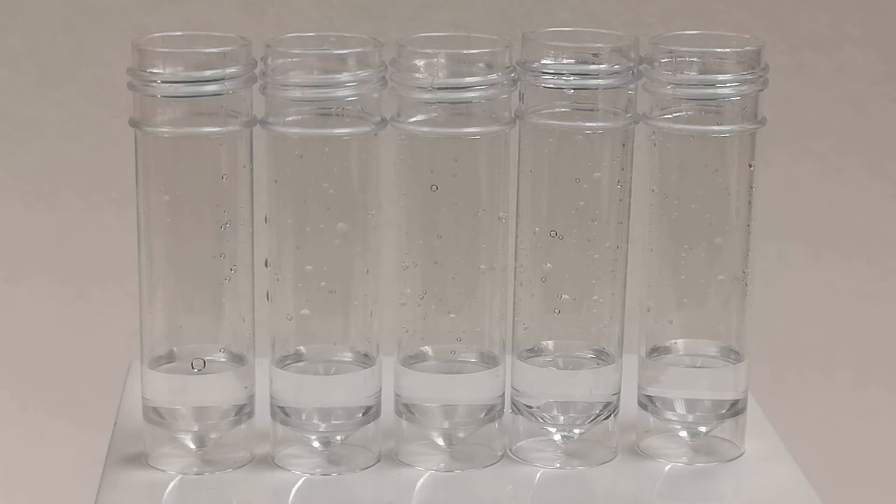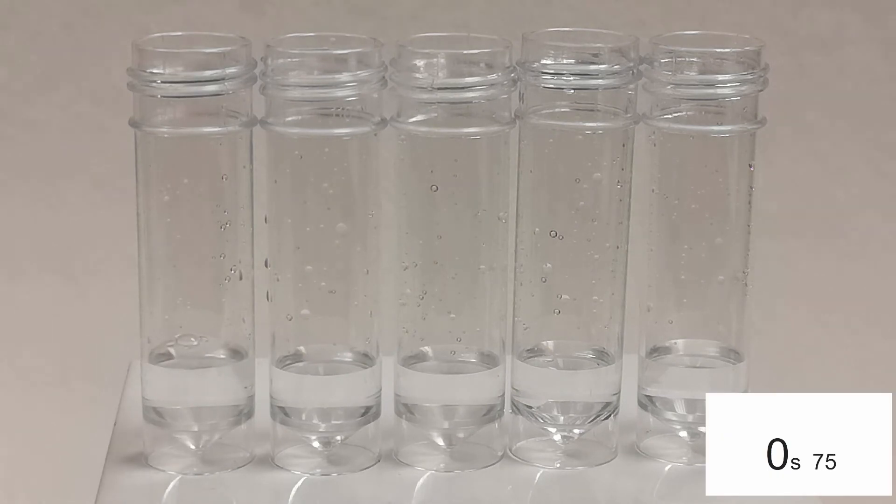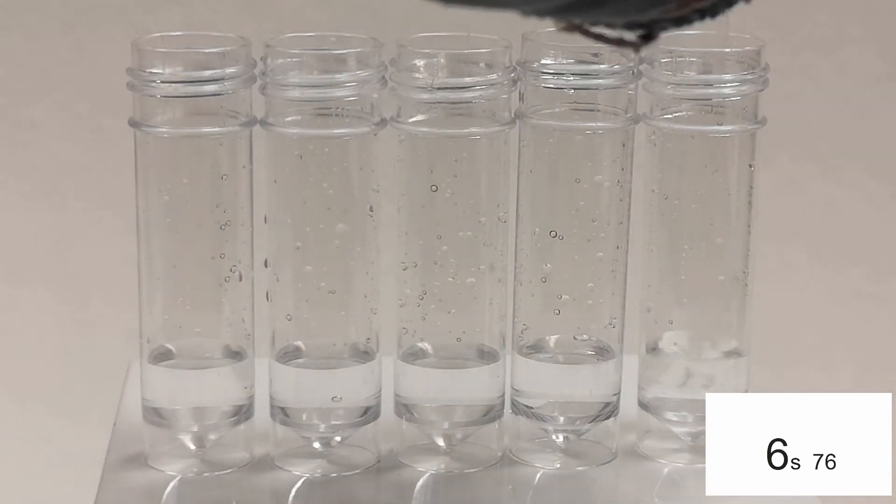Another reaction that could be used to investigate reaction rates is the iodine clock. This is the reaction between potassium iodide and hydrogen peroxide. The solution also contains sodium thiosulfate and starch solution.